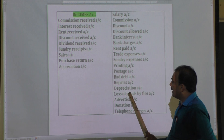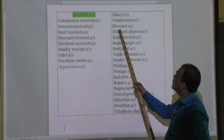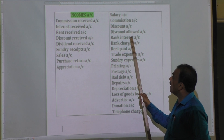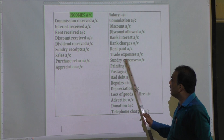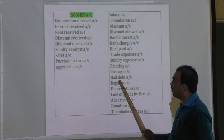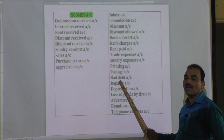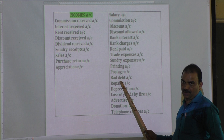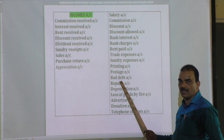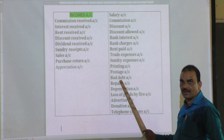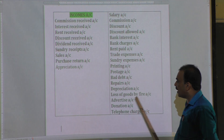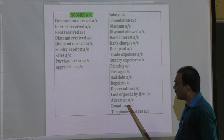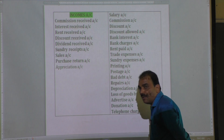Expense account examples: discount allowed account, bank interest account, bank charges account, rent paid account, trade expense account, sundry expense account, printing account, postage account, bad debt (irrecoverable debt — called 'kettasala' in Kannada), repairs, depreciation, loss of goods by fire, advertising account, donation, and telephone charges — all are various expense examples.